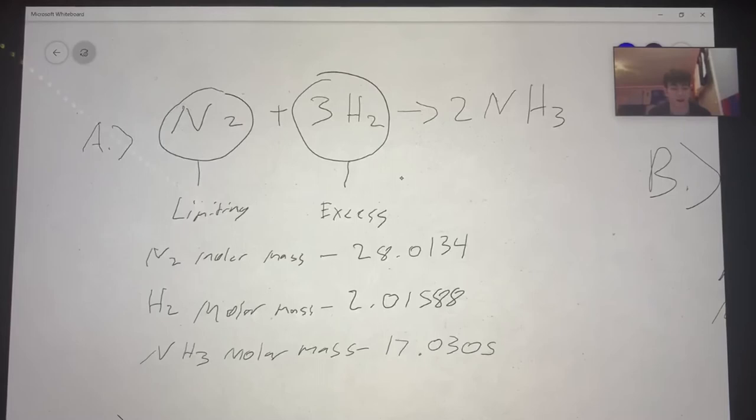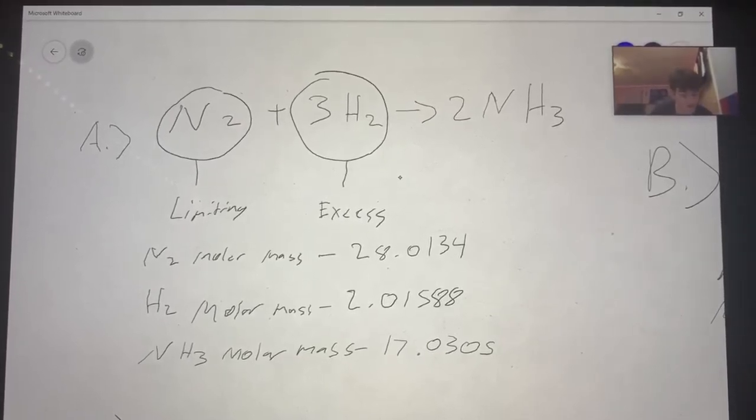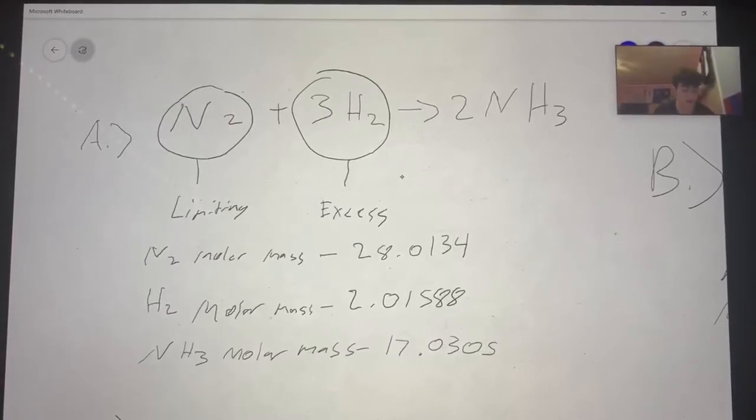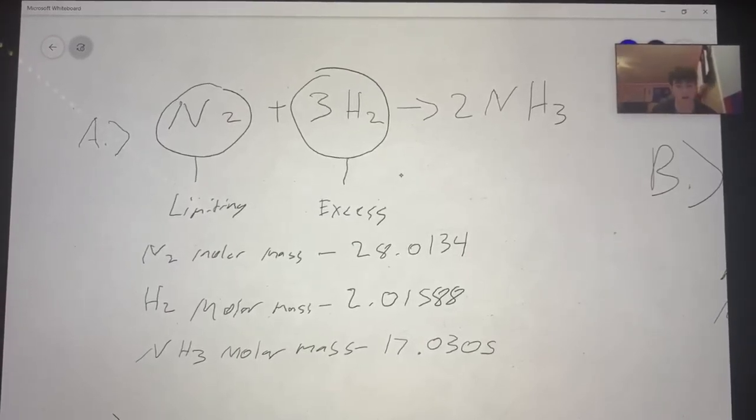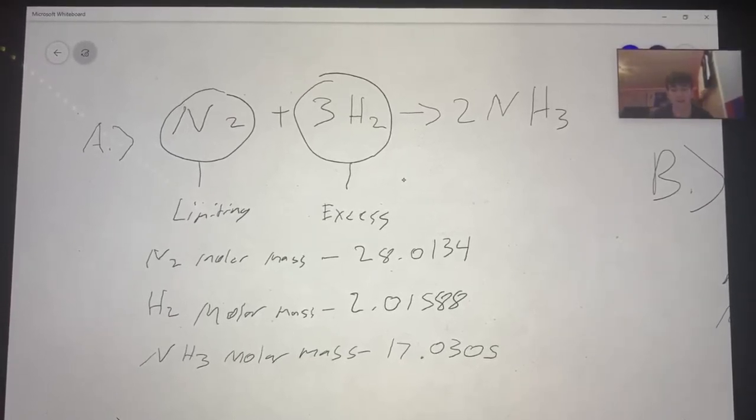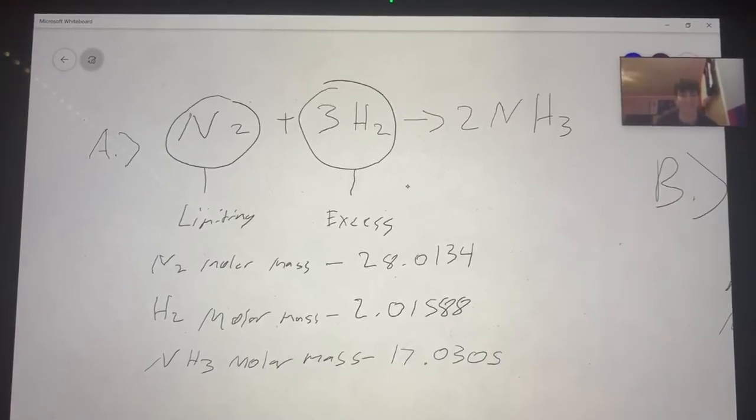Similarly for H2 hydrogen, we found the atomic mass of hydrogen which is 1.00794. When doubled it becomes 2.01588, which is the molar mass of this substance.